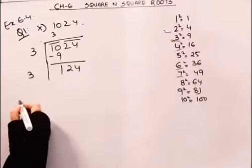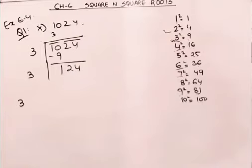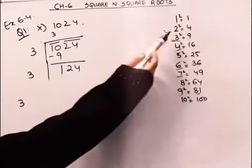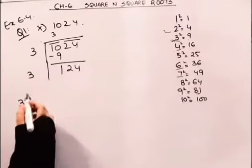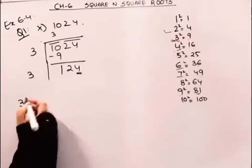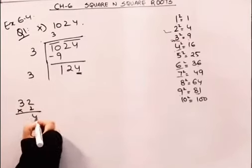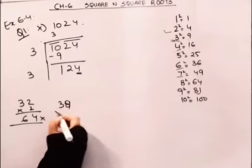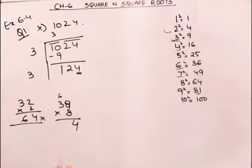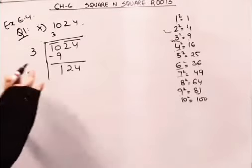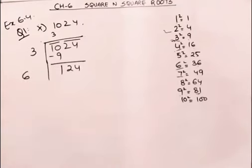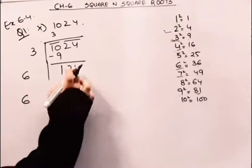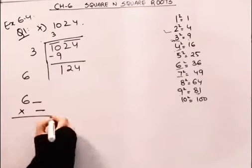Agar ham dekhti hai ki 3 ke saath aisa kong sa number rakti hai ki unit place per 4 raha hai. Yaa to that number could be 2, yaapir 8. 2 ya 8 rakti hai to answer mein unit place per 4 mila hai. 3 plus 3 is 6. So agar ham 6 ke saath kong saize a number hoonye, multiply kaartte hai usi number se thar raktke, so unit place per hame 4 milega.